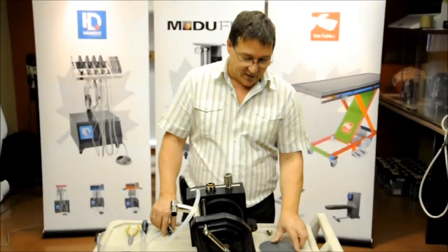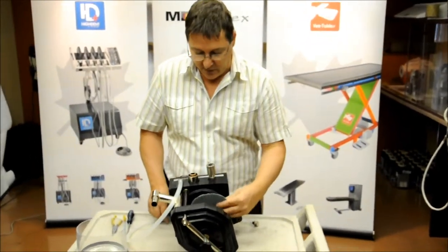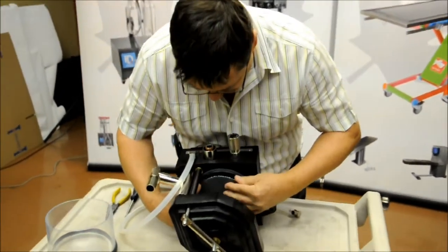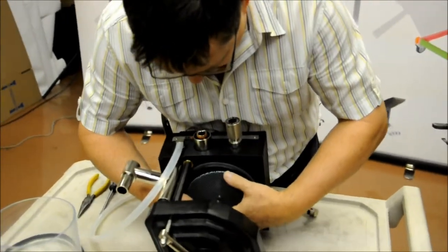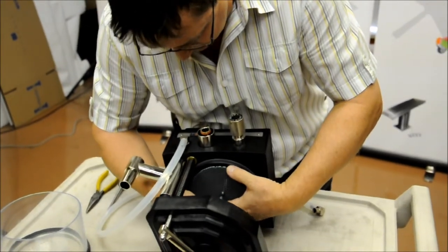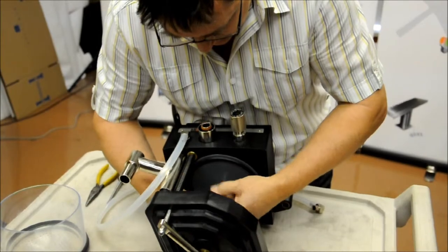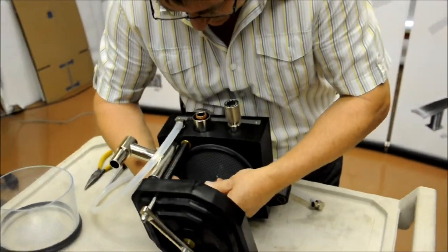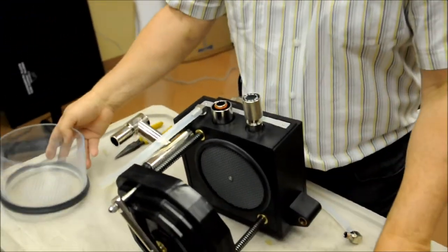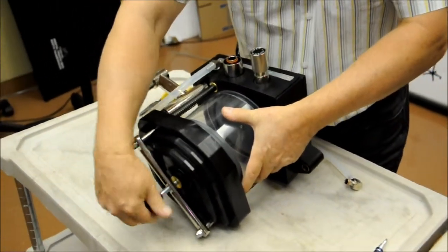Now that we have reinstalled our disc, we need to reassemble the absorber. So we take our perforated grill and we reinstall it, reinstall our soda lime canister, and tighten the canister into place.